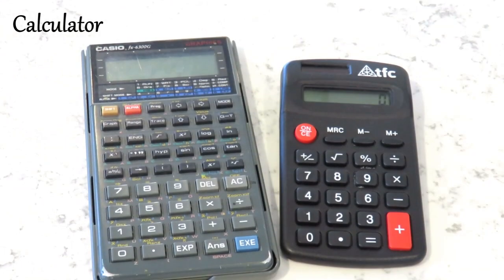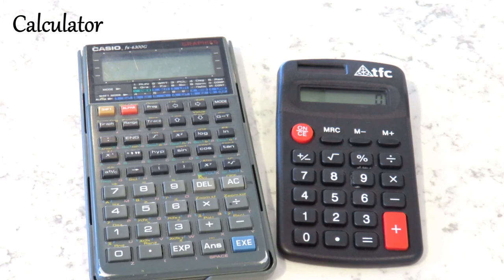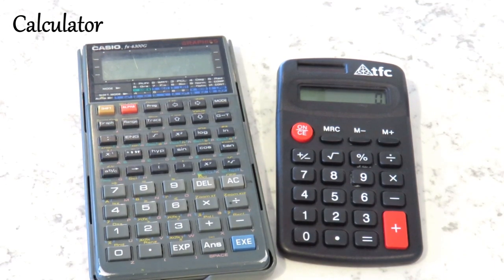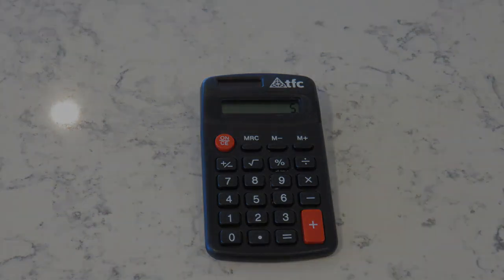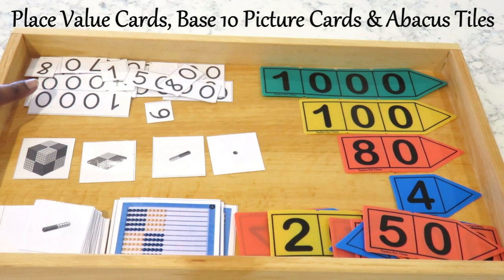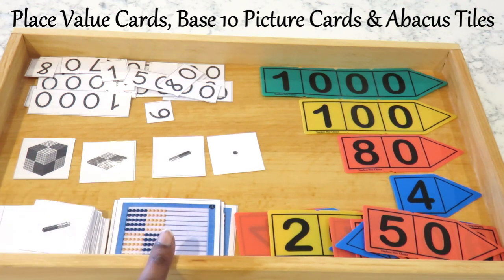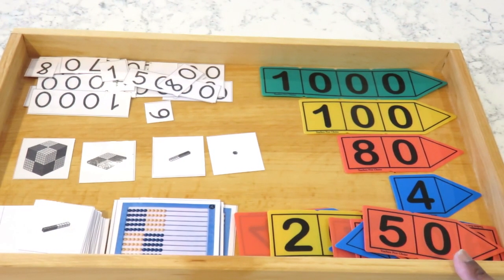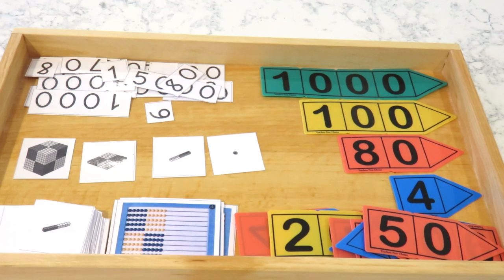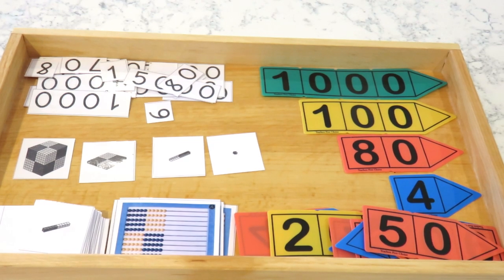We had a calculator so we didn't buy theirs. They don't use a scientific calculator, just a simple one. The program comes with place value cards, base 10 picture cards, and abacus tile cards. We had some place value cards from before that are plastic and durable. We were able to print the other cards from the website and just laminated those to make them more durable.